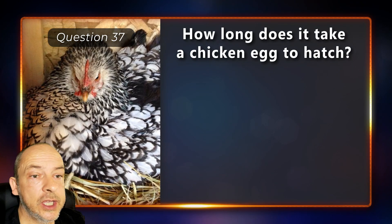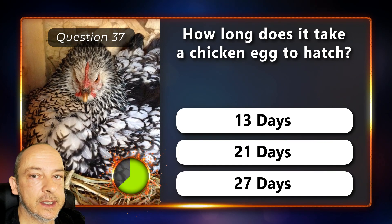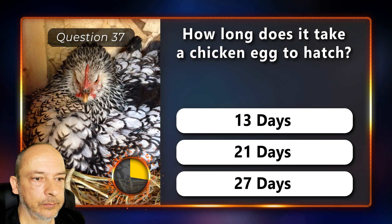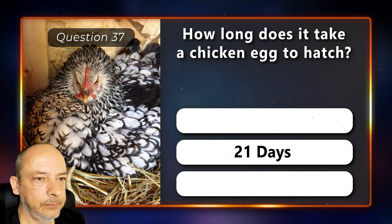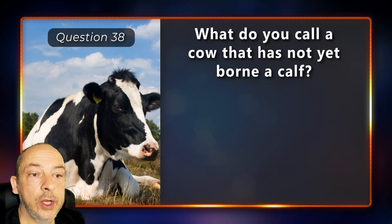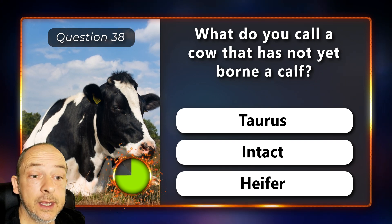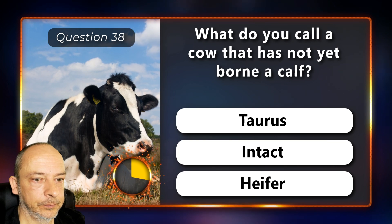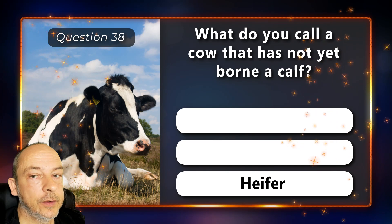How long does it take a chicken egg to hatch — 13, 21, or 27 days? 21 days. What do you call a cow that has not yet born a calf — a taurus, intact, or a heifer? It's called a heifer.